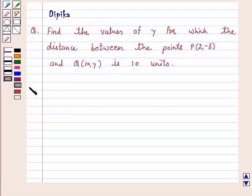So let's start the solution. According to the question, it is given that the distance between the points P(2, -3) and Q(10, y) is equal to 10. So PQ is equal to 10.